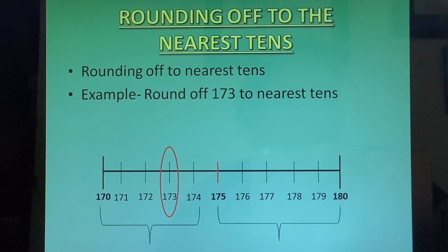Now whichever bracket the number lies in. Our number is 173. It is lying in the first bracket. Therefore it will round off to 170. Why? Because it is closer to 170 than to 180. Had it been lying in the second bracket, it would have rounded off to 180. Because that way those numbers are closer to 180.